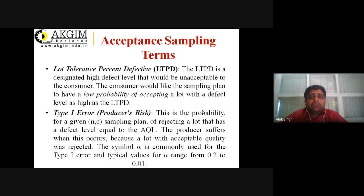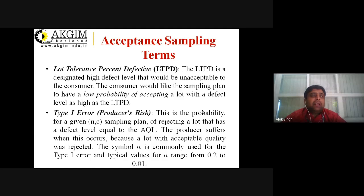The second term is Lot Tolerance Percentage Defective, or LTPD. There are two types of risk. Producer's risk is that you reject a good lot, and consumer's risk is that you accept a bad lot.